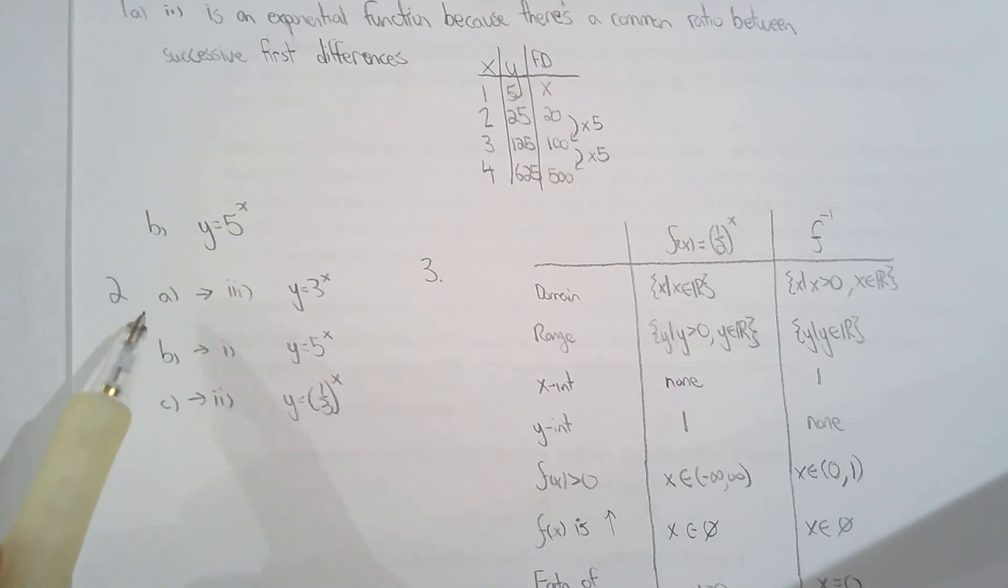For A and B, I looked at the y-intercept of the exponential function, then took the inverse of that point and matched it up. Graph A matches with graph 3 and graph B matches with graph 1.